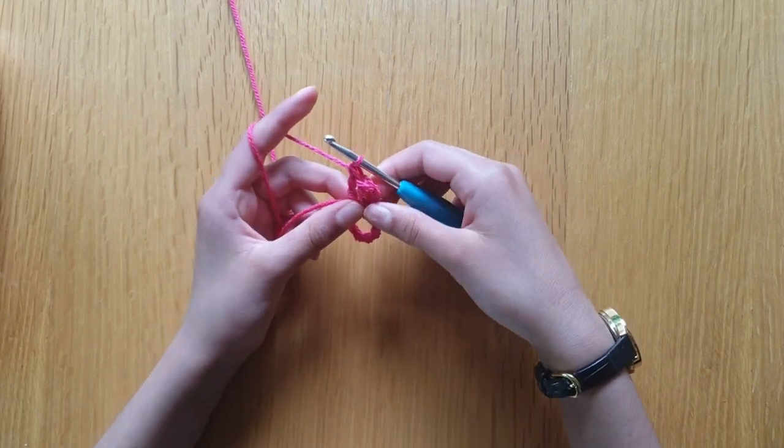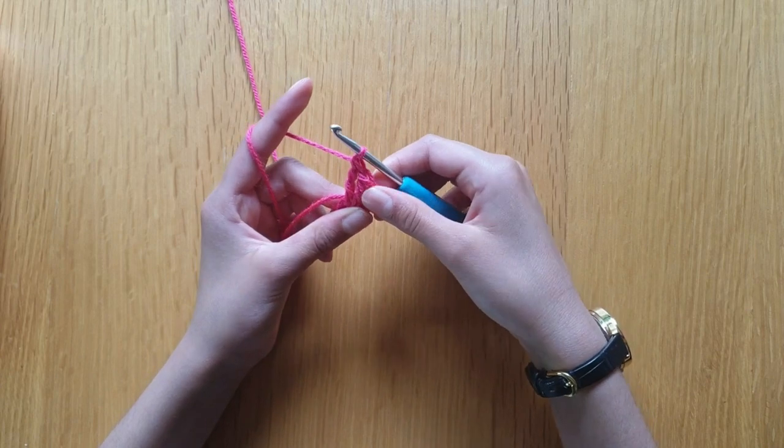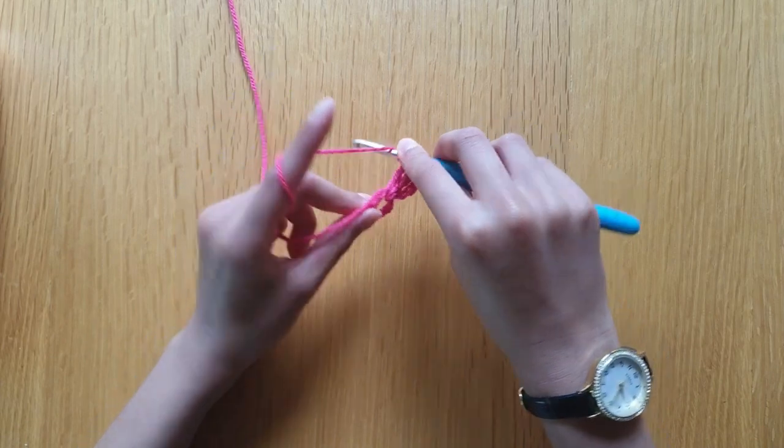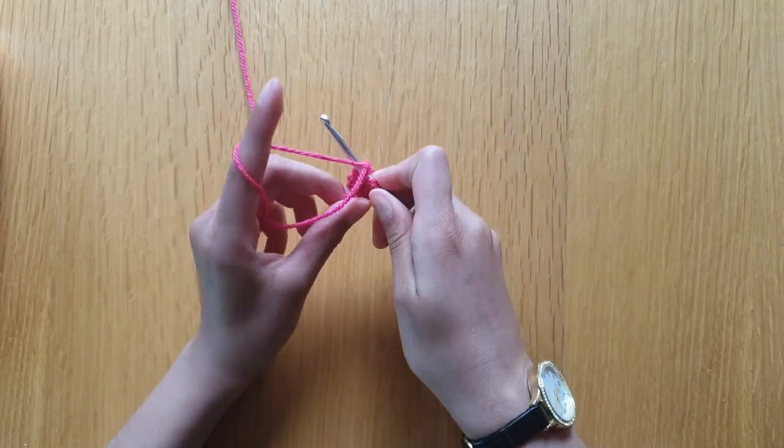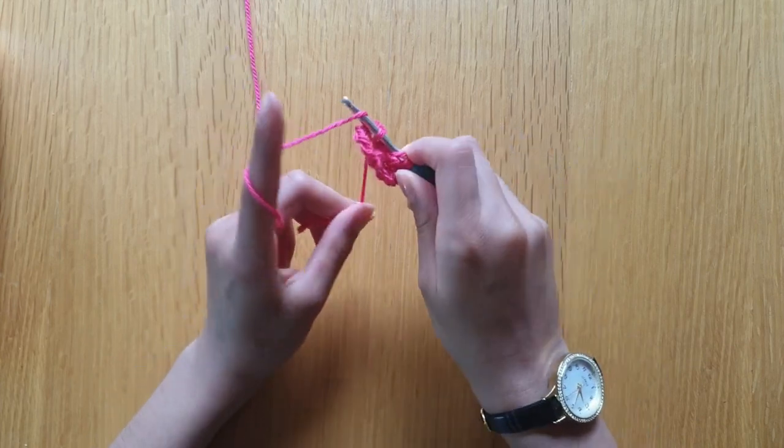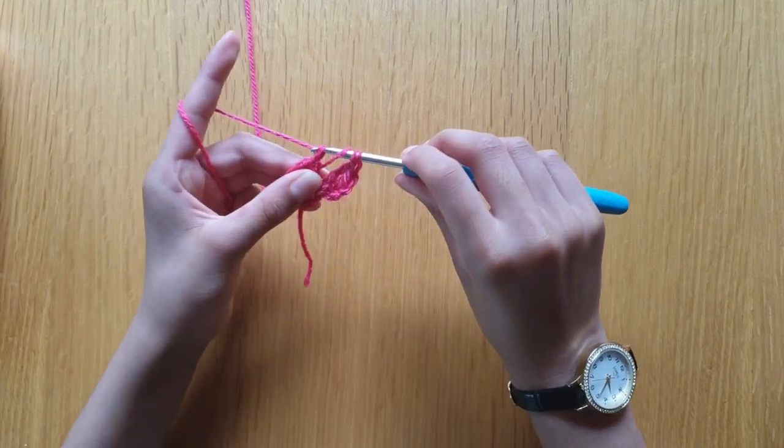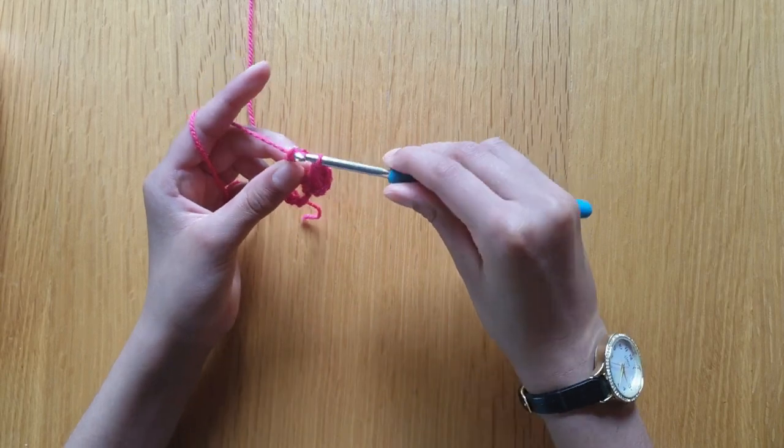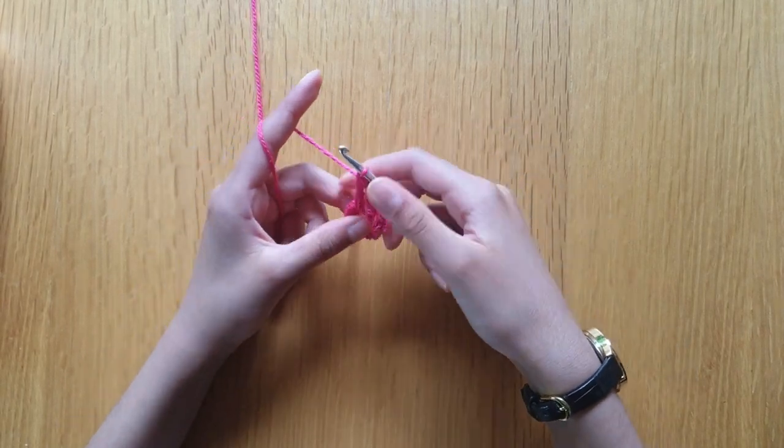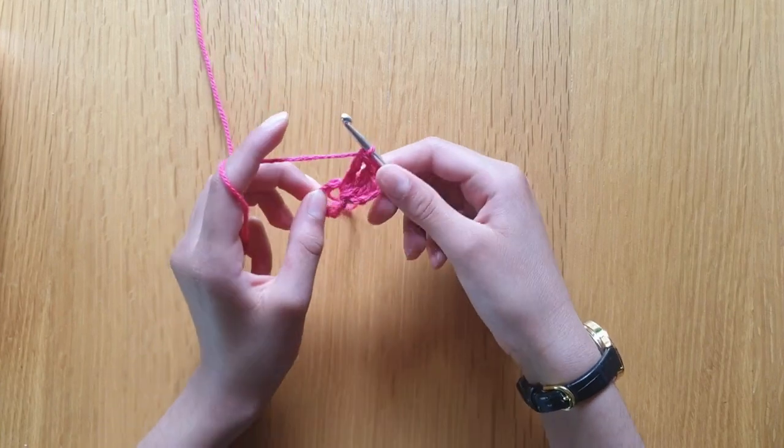That is two stitches. We've done three stitches, but the chain three does not count as a stitch. So we're going to do it once more. Yarn over twice, insert the hook, yarn over, pull through, yarn over, pull through two, yarn over, pull through another two, yarn over, pull through two. Now we've created our first petal.